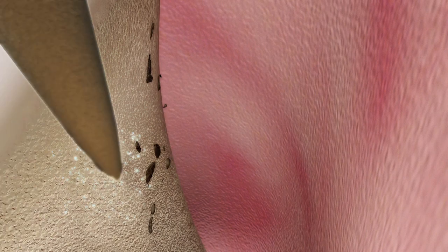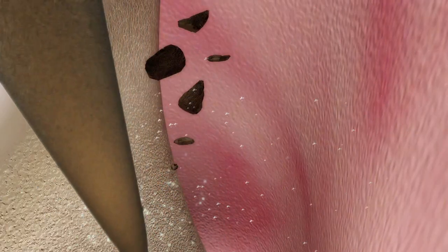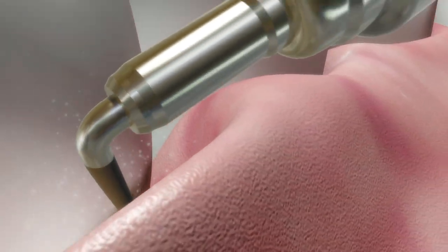Now we go back over the root surface very lightly with a piezo scaler, using a side-to-side motion from the top to the bottom of the pocket just to confirm all the calculus is removed. Thorough removal of the calculus is crucial to good healing results.